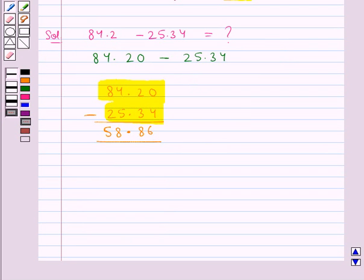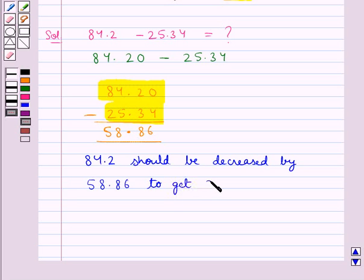So we can now say that 84.2 should be decreased by 58.86 to get 25.34.